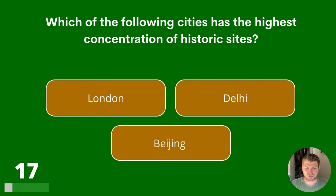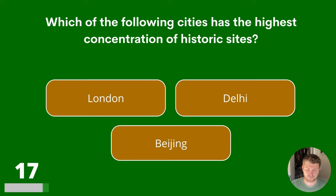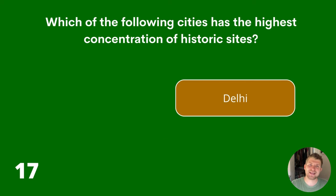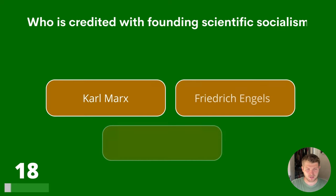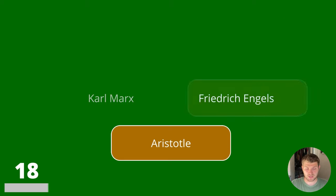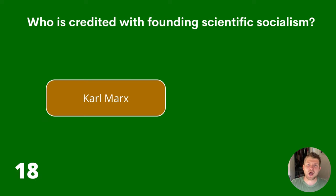Question 17. Which of the following cities has the highest concentration of historic sites? London, Delhi or Beijing? Question 18. Who wrote The Communist Manifesto? Karl Marx, Friedrich Engels or Aristotle? The answer is Karl Marx.